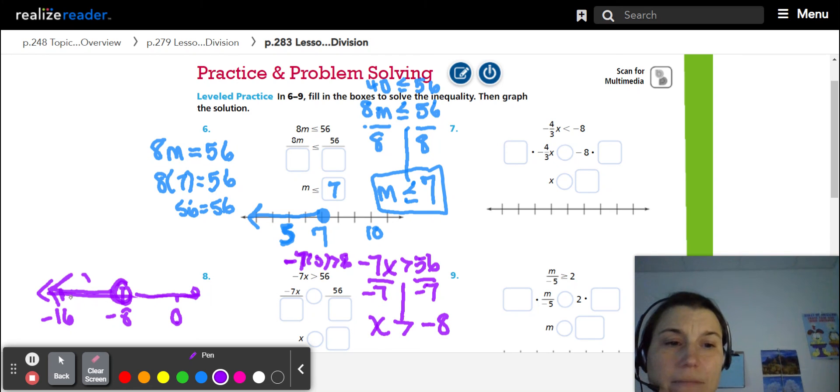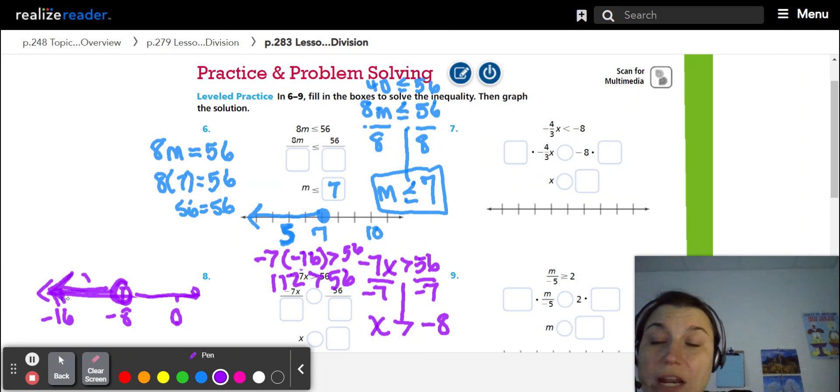like negative 16. Well, what happens when I do negative seven times negative 16? Is that answer greater than 56? So that's 112. Is 112 greater than 56? Yes. So this is the way I should be shading.